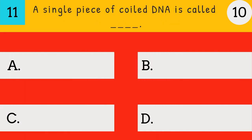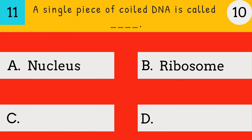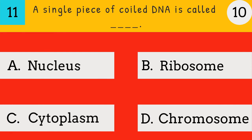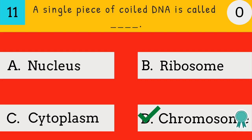A single piece of coiled DNA is called — nucleus, ribosome, cytoplasm, or chromosome? The answer is chromosome — a single piece of coiled DNA is called a chromosome.